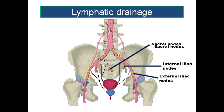The lymphatics mainly end in external iliac lymph nodes along with the vesical vessels, internal iliac lymph nodes along with vessels draining the membranous urethra, and lastly sacral or obturator nodes. So the vessels accompany the vesical vessels to reach external iliac nodes; accompanying the membranous urethral vessels, they end in the internal iliac nodes. Other nodes involved are the laterally placed obturator nodes and the posteriorly/medially placed sacral nodes.